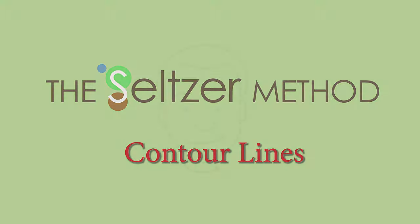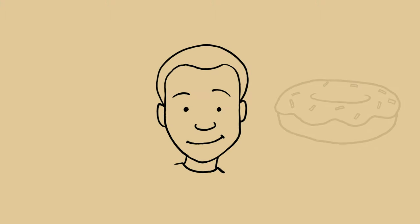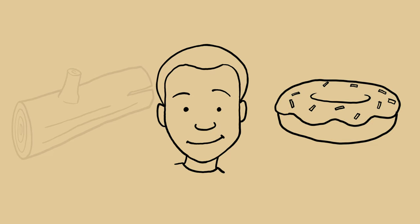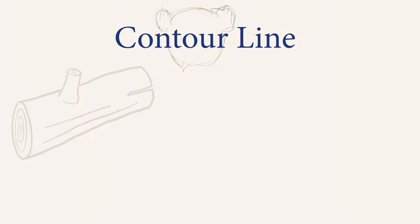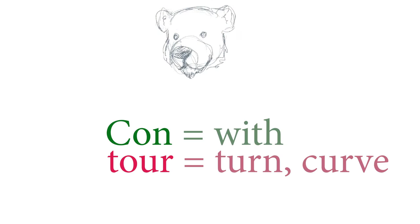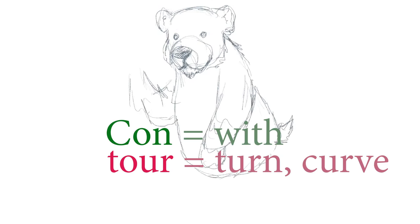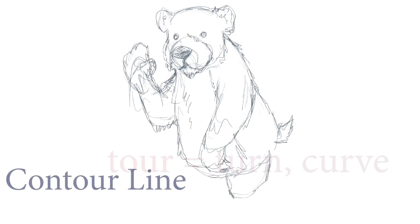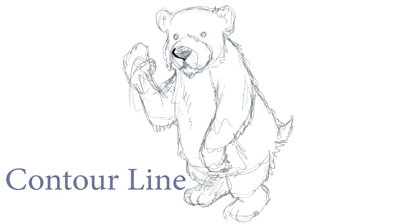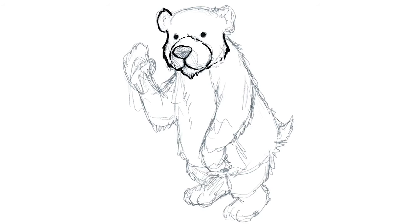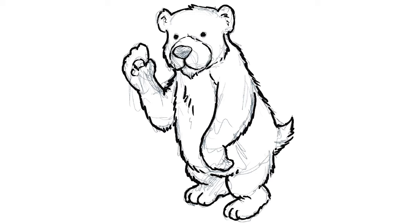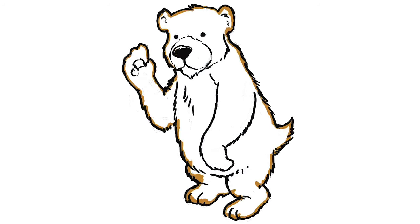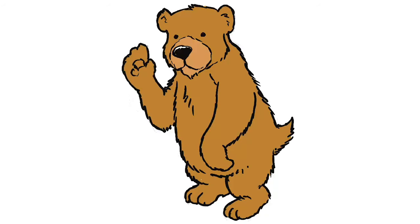Did you know there's a name for those lines you've been drawing all your life? The line that moves along the outside edge of something is called the contour line. 'Con' means 'with' and 'tour' means 'to turn or curve,' so a contour line is one that follows the curve. Sometimes when we say the contour of something, we mean only the outline.